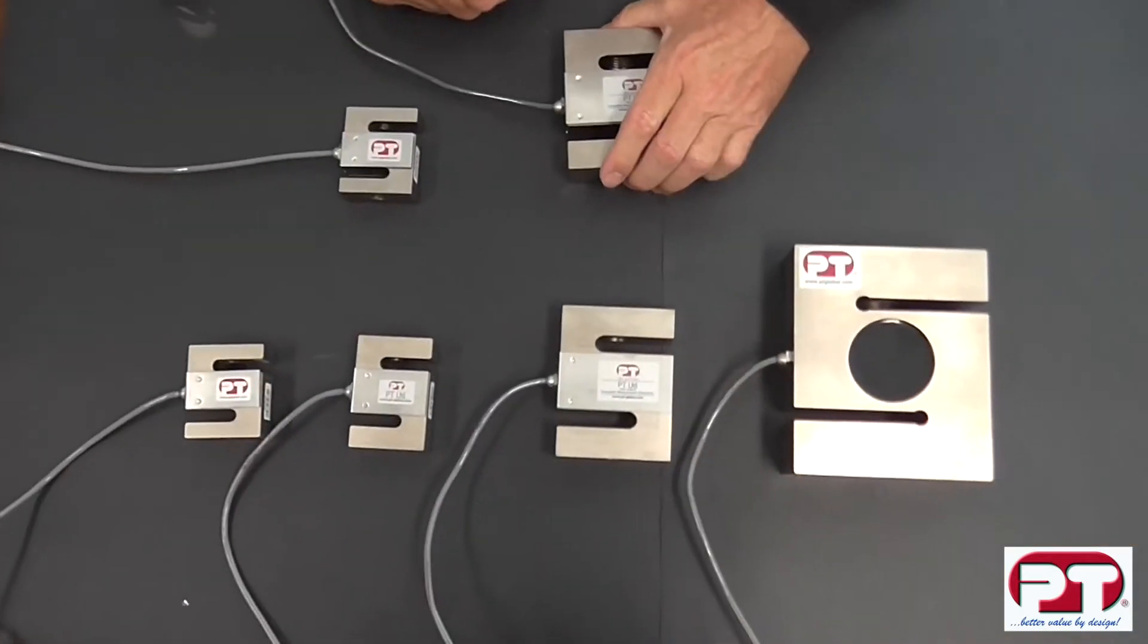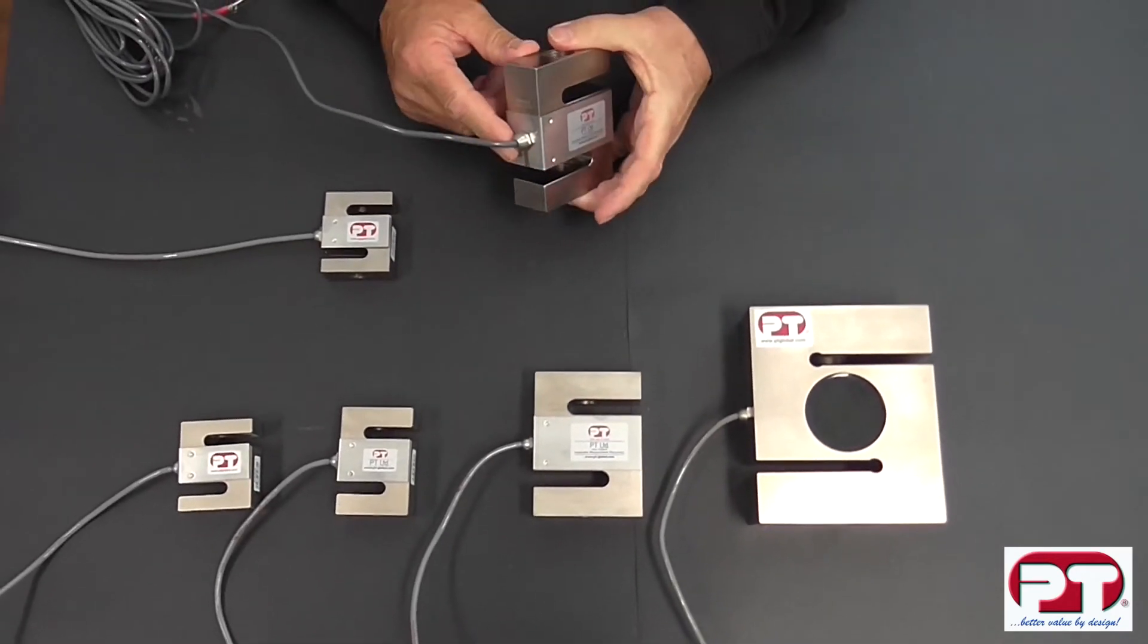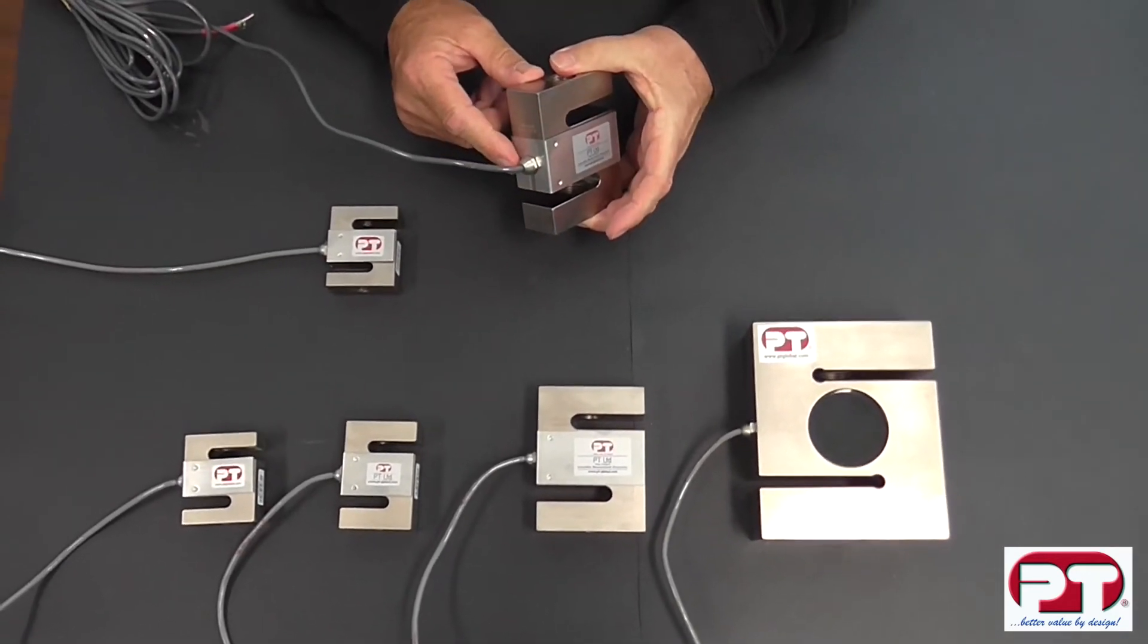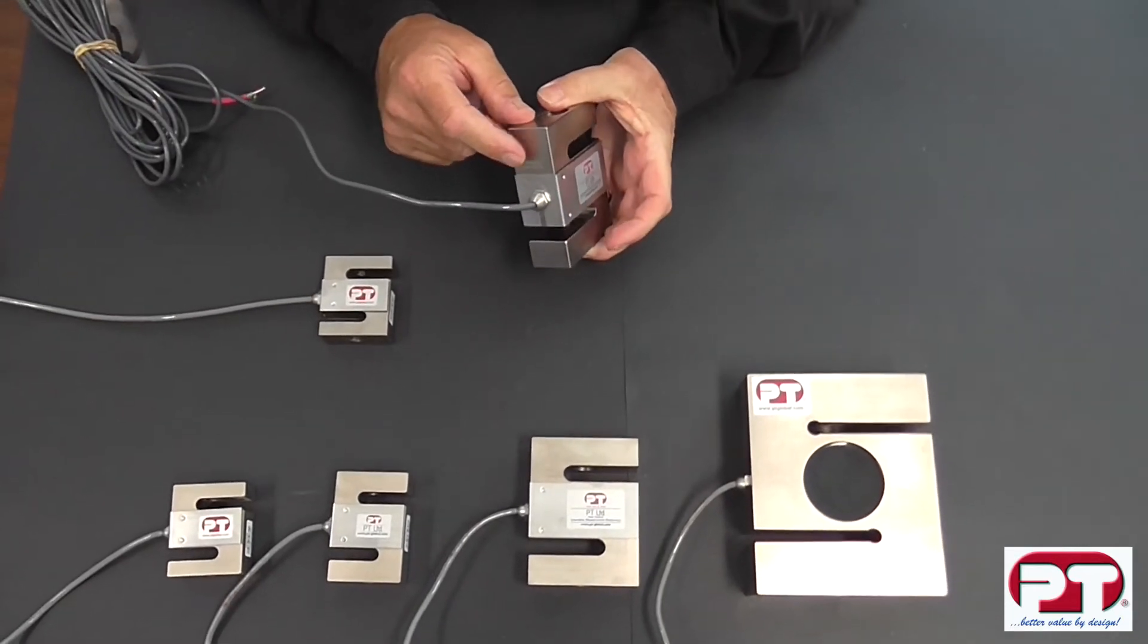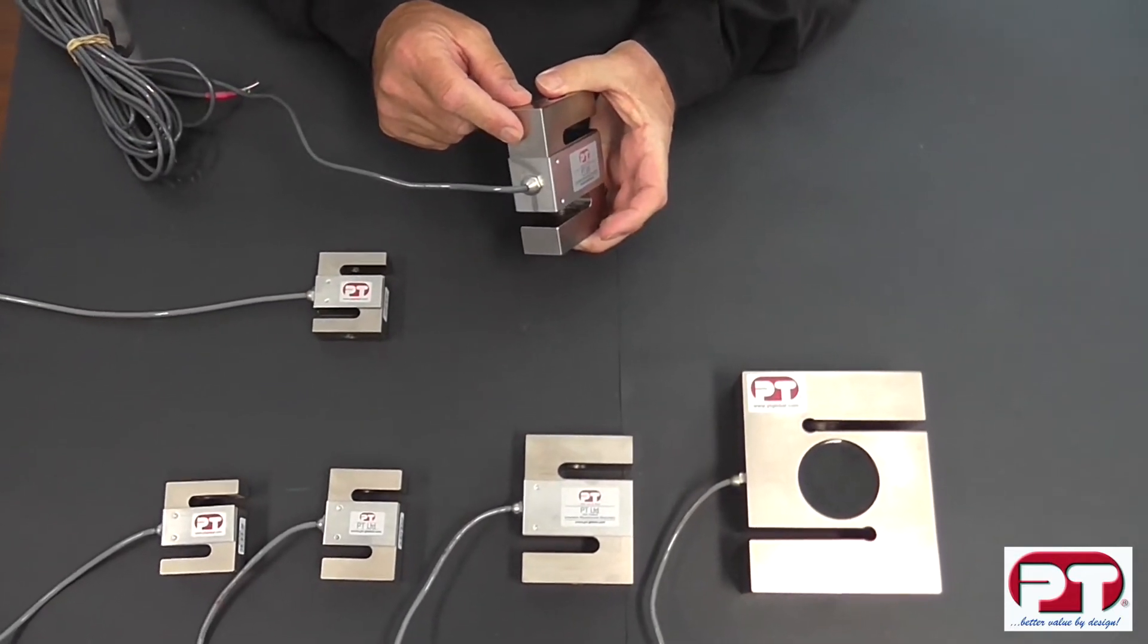On the load cell body at the cable entry you'll find engraved the capacity and serial number of the load cell. This is a 3,000 capacity cell.